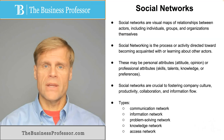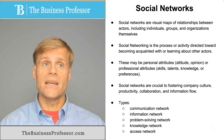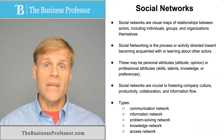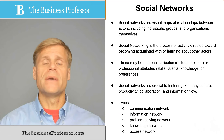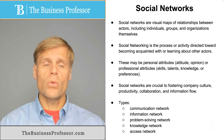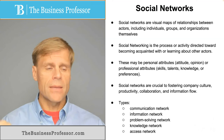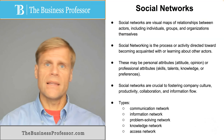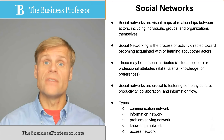There are numerous types of social network, generally referring to the reason the network forms or comes into existence. It can be a communication network whereby you're transferring information, or simply an information network where it's less about personal communication and more about the flow of pure data. It could be a problem-solving network, where any issue is collectively farmed out or worked through a sequence of individuals in order to come to some level of resolution.